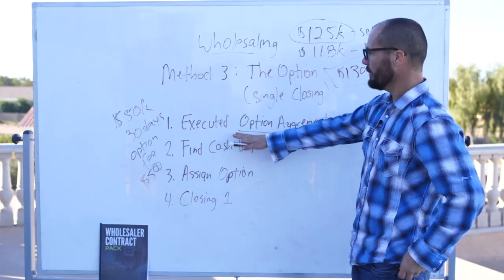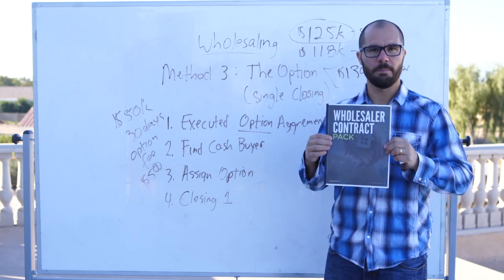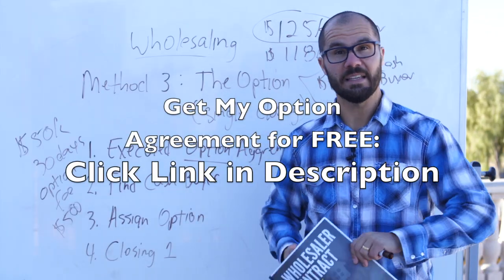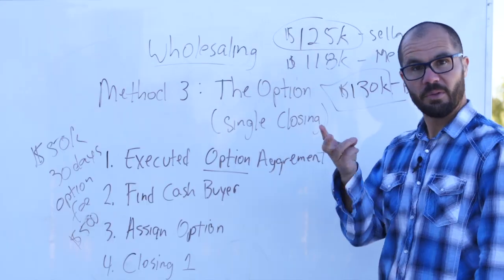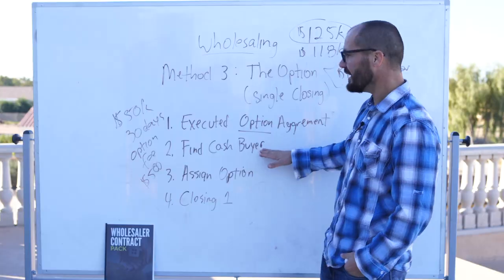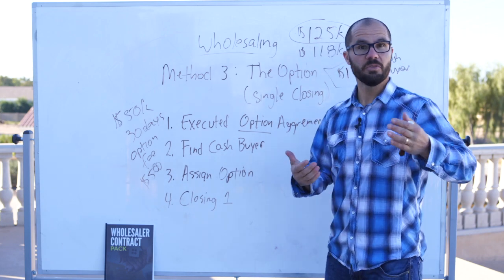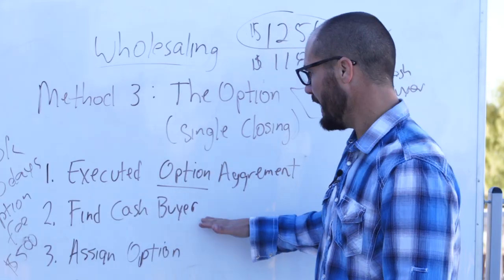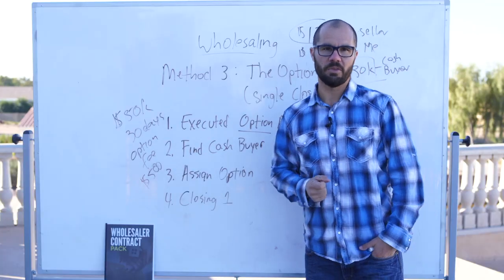Let's walk through the four steps. Step one: you execute an option agreement. I'll give you my option agreement — it's a simple contract in my wholesaler contract pack, which you can download for free by clicking the link in the description. Remember the three things required: price, a time frame, and consideration for the option agreement to be binding. Step two: find your cash buyer, just like regular wholesaling. Step three: once you find your cash buyer, use an assignment contract — also in my contract pack — to assign the option agreement to the new cash buyer. The new cash buyer then executes the option agreement, you go to closing, and you walk away with your wholesale fee.